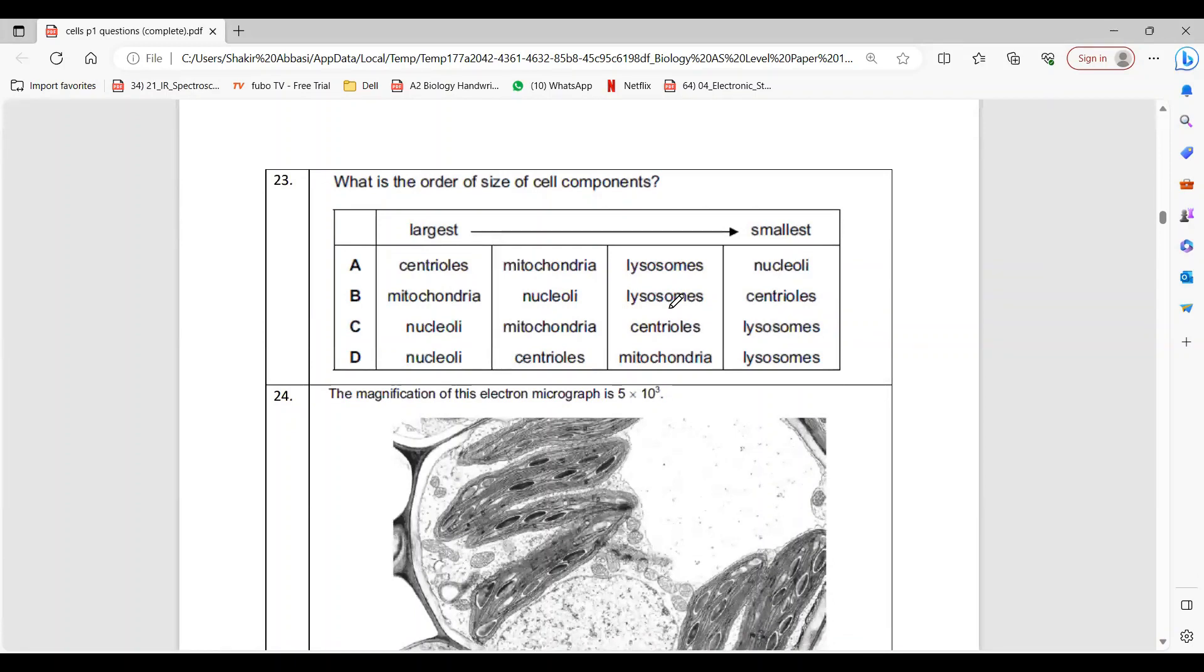Question 23: What is the order from biggest to smallest? We all know that out of all the organelles listed here, beta seems right because mitochondria, nucleoli - remember nucleoli is the plural of nucleolus which is inside the nucleus. Nucleolus is the largest of nuclear organelles and also bigger than lysosome. So mitochondria, then nucleoli, then lysosome, and then centrioles.